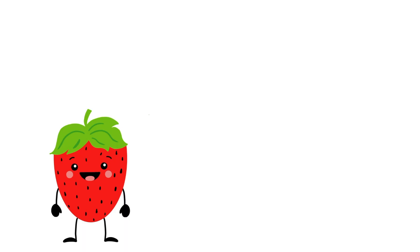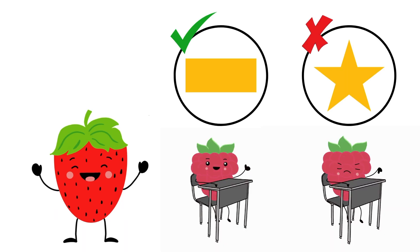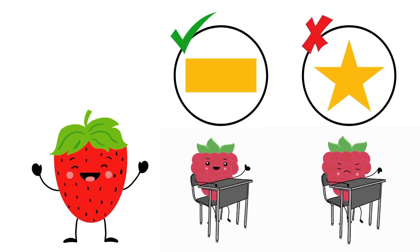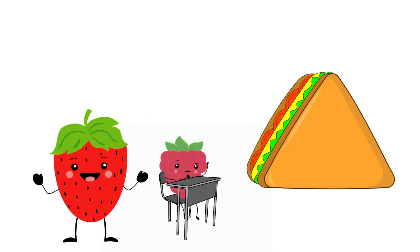Now you know what a rectangle is! Let's practice looking for rectangles. I'm going to show you an object, and if it's a rectangle I want you to give me a big thumbs up and nod your head yes. But if I show you something that's not a rectangle, give me a big thumbs down and shake your head no.